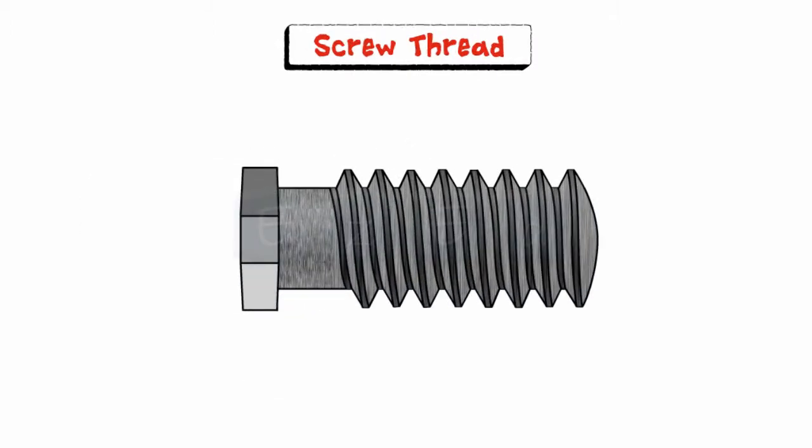The cut that is formed on the rod is commonly known as a screw thread, and the threaded rod is known as a screw.